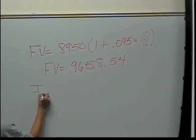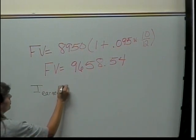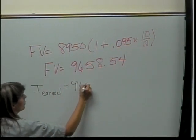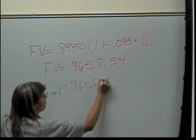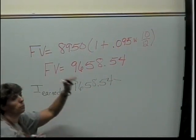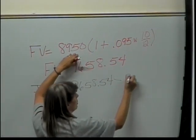How do I go from future value to interest? Well, I use my formula. My interest earned is the future value, 9658.54, minus the principal, which was the 8950.